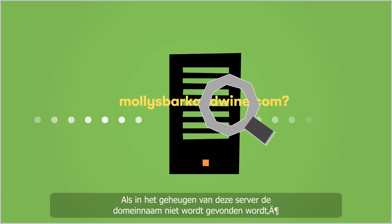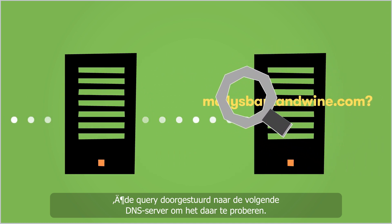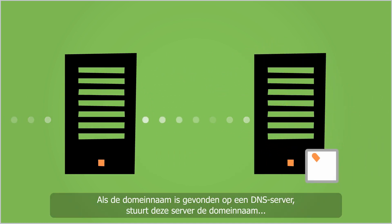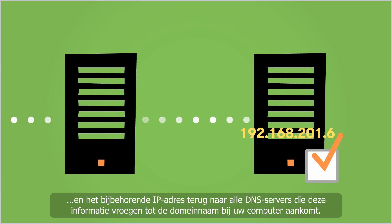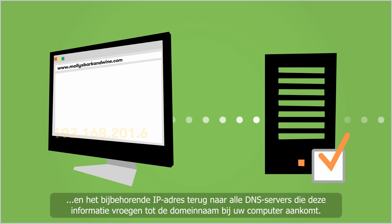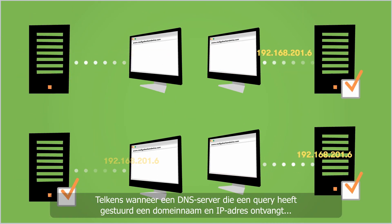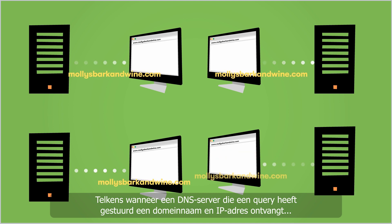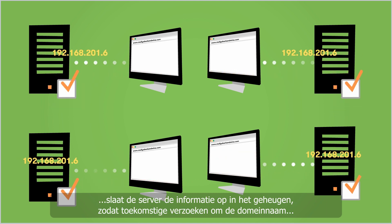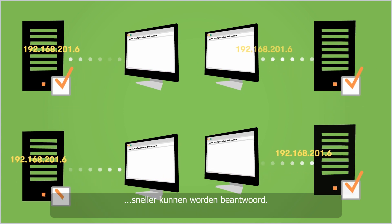If it doesn't find the domain name in its memory, it sends the query on to the next DNS server to see if it can help. As soon as the domain name is found on a DNS server, that server returns the domain name and its IP address to the requesting DNS server, and on down the line until it arrives back at your computer. Each time a requesting DNS server receives a domain name and IP address, the server stores the information in its memory so any future requests for the domain name can be answered more quickly.